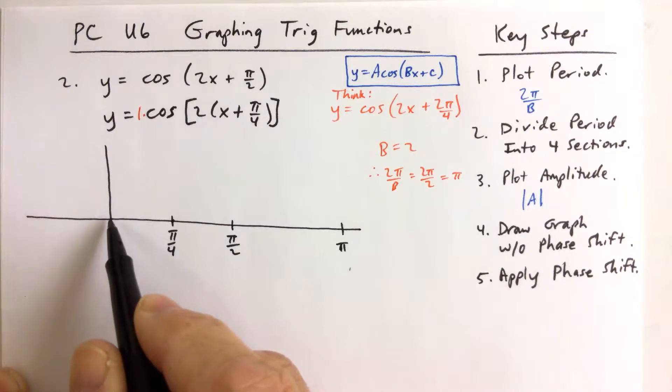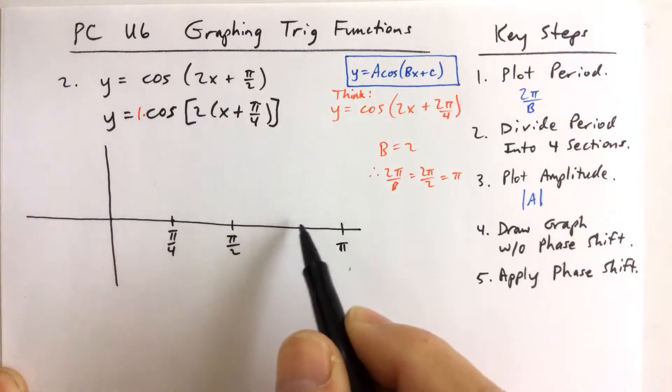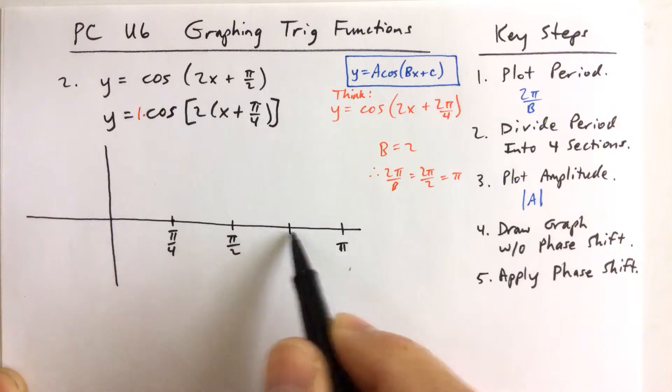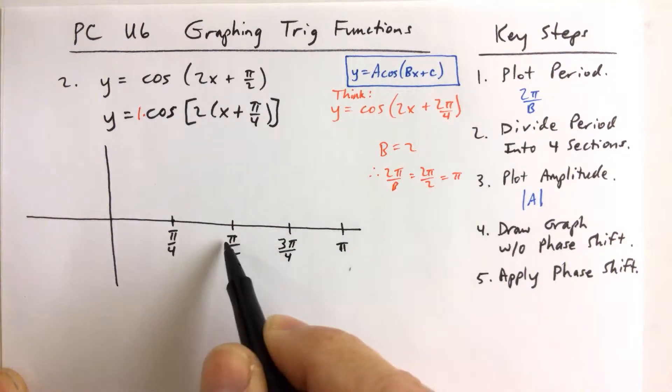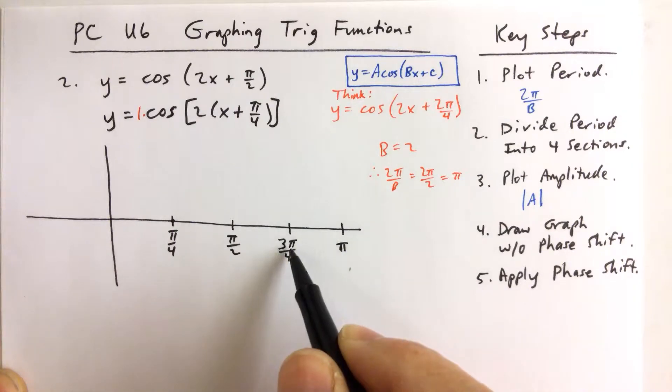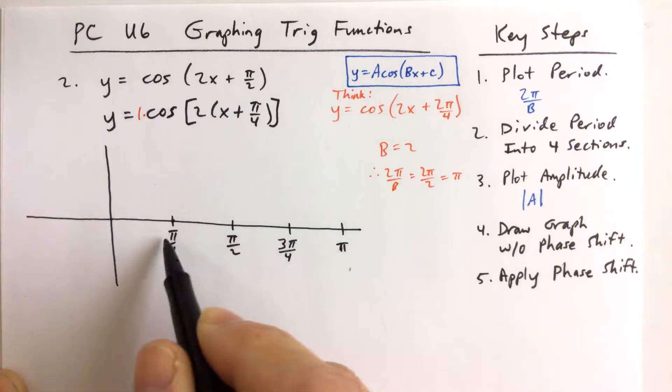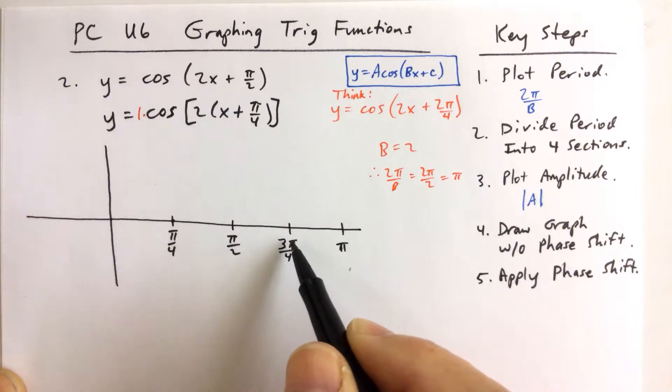So I can just count pi over 4's. 1 pi over 4, 2 pi over 4, and then to find that radian measure of that spot right there in between the pi over 2 and the pi, just count by pi over 4 is 1, 2, 3 pi over 4.